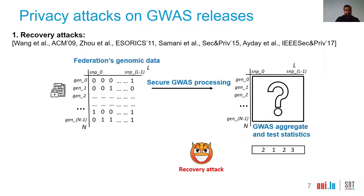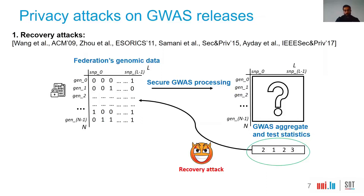Let's see in more detail the previous attacks on GWAS releases. In a recovery attack, the federation gathers encrypted genomic data and processes it securely, then releases the statistical results. However, an adversary can observe the statistics and might be able to compute many possibilities for the genotype sequences of individuals, potentially finding the correct sequences and thereby identifying and inferring the genotype sequences of people who participated in a study.